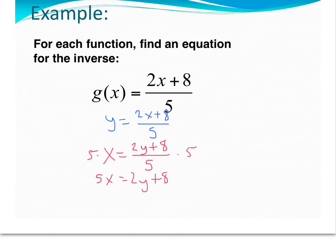Now, I want to keep getting closer to getting that y alone, so I'm going to subtract 8. I'm left with 5x minus 8 equals 2y, and lastly, get that y by itself by dividing by 2.